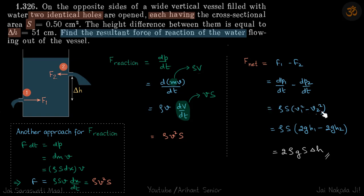Now we know velocity of efflux is root of 2GH1 for V1, and V2 will be root of 2GH2. So V1 square becomes 2G H1 minus 2G H2, and we know H1 minus H2 is delta H that is given to us. So this becomes 2 rho S G delta H, which is our answer.